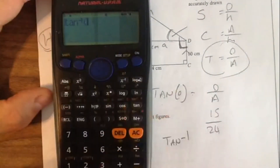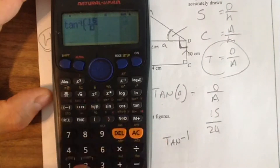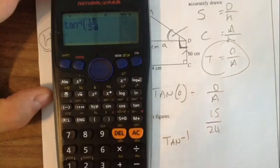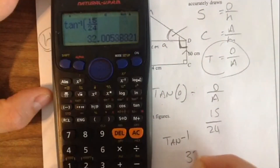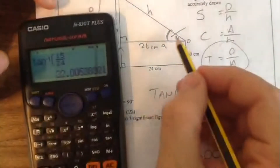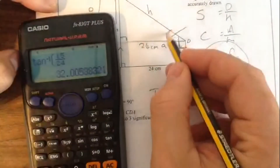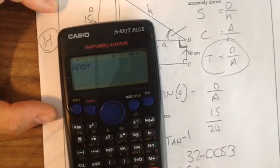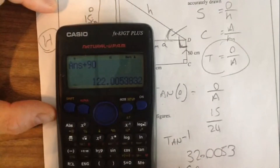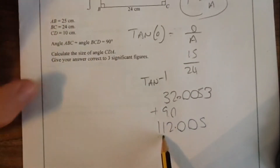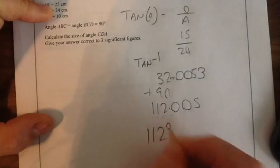Shift tan, then 15 over 24 gives 32.005 degrees. I have to add 90 as well, because it's asking for the whole angle CDA. So adding 90 degrees gives 122.005. To three significant figures: the first significant figure is 1, second is 2, third is 2. So the answer is 122 degrees.